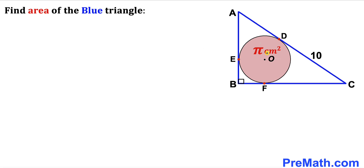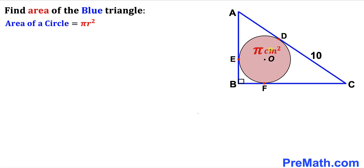Let's get started. First, let's focus on this pink circle whose area has been given as π. We are going to calculate the radius using the formula: area = π r². In our case the area is π, so π = π r². Dividing both sides by π, we get r² = 1.